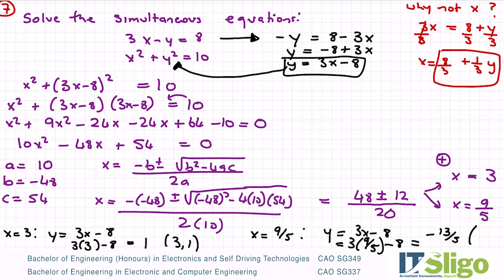So that is the point 9 over 5 comma minus 13 over 5. That's how you do those simultaneous equations.